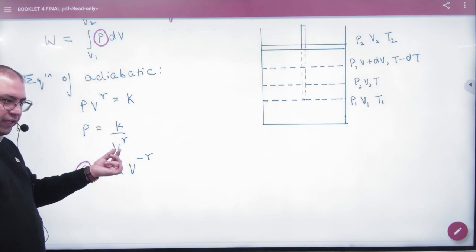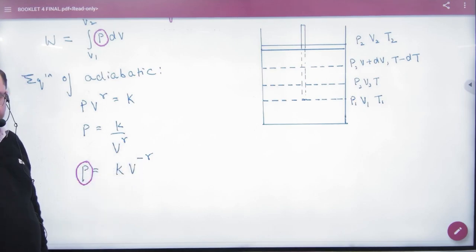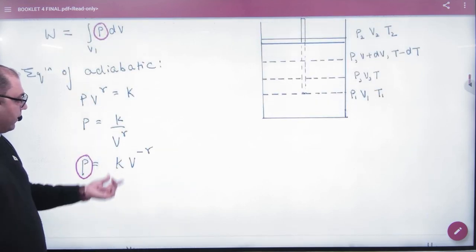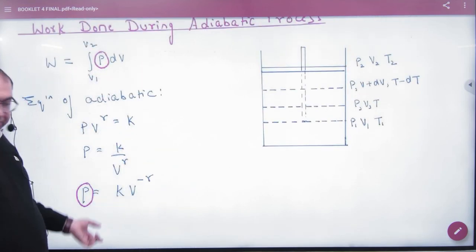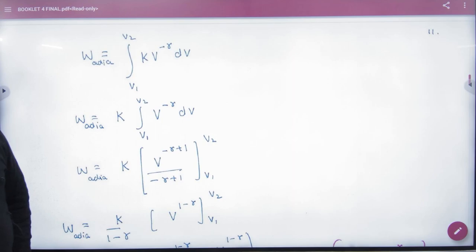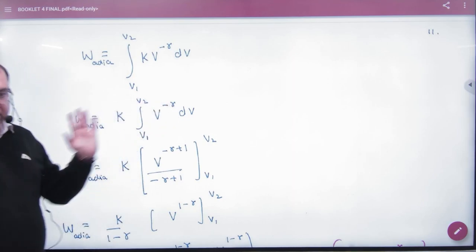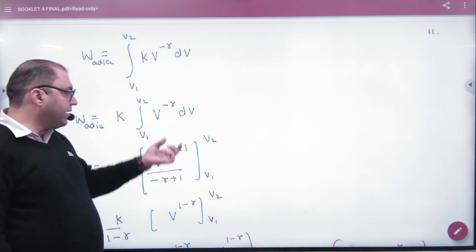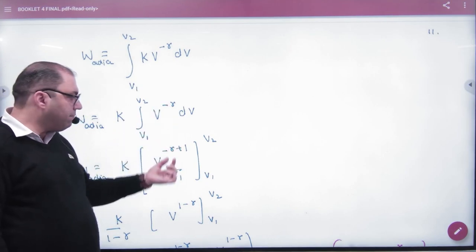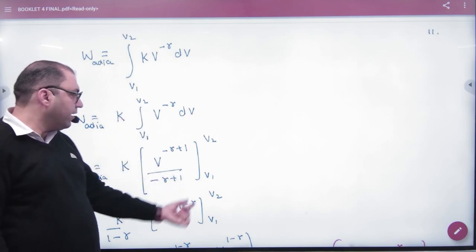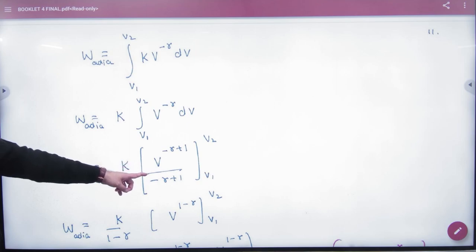So P value came. Take this P value and put it here. So this equation came. This step is clear. K constant comes out. Integration - remember, V to the power minus gamma. Add one to the power, so V to the power minus gamma plus one, divided by minus gamma plus one, from V1 to V2. So this step is clear, integration.